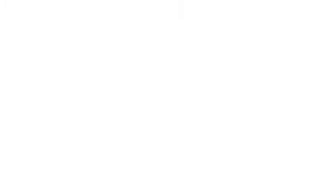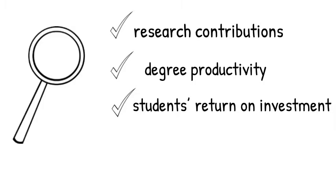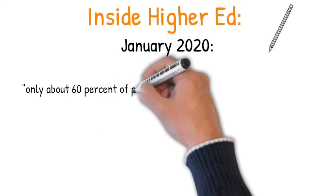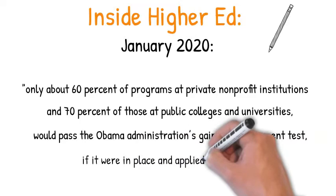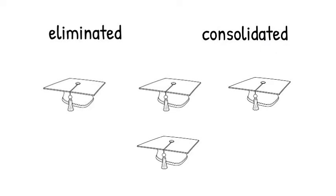A second stage of reforms should consist of scrutinizing academic departments for research contributions, degree productivity, and students' return on investment. Inside Higher Ed reported in January that only about 60% of programs at private nonprofit institutions and 70% of those at public colleges and universities would pass the Obama administration's gainful employment test if it were in place and applied to them. Low-performing departments that have fewer than 10 graduates per year should be eliminated or consolidated.